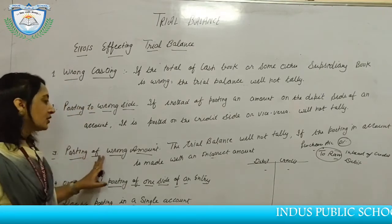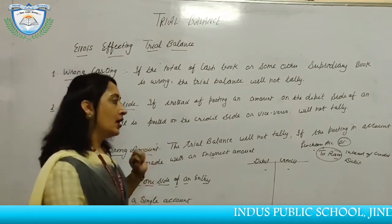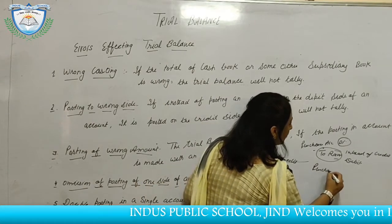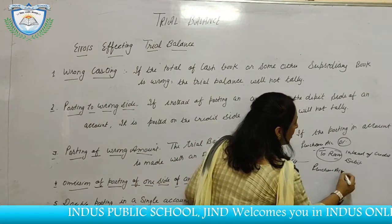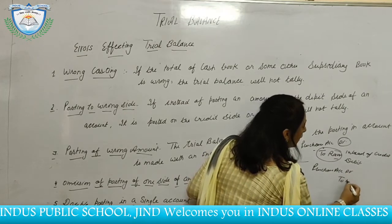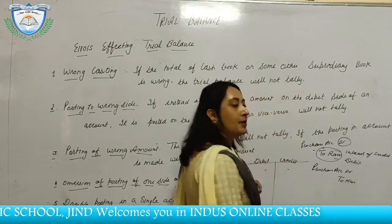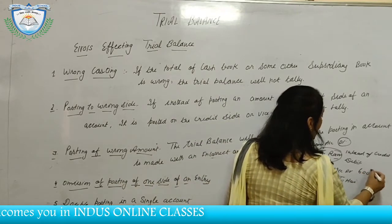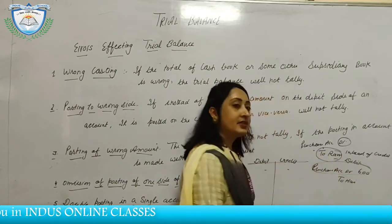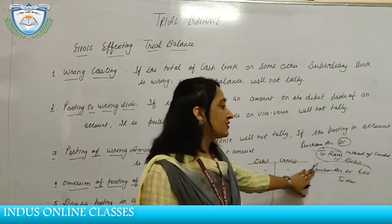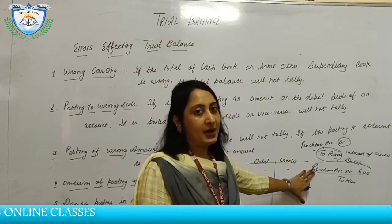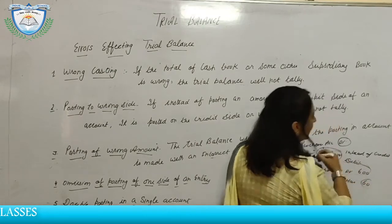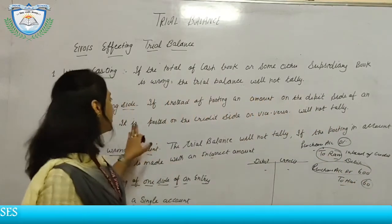The next error is posting of wrong amount. For example, we have purchased goods from Hari for rupees 600. We have correctly entered rupees 600 in the purchases account, but wrongly posted rupees 60 to Hari's account. Then the total will not tally.